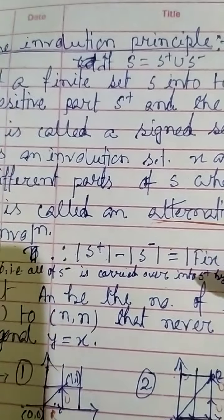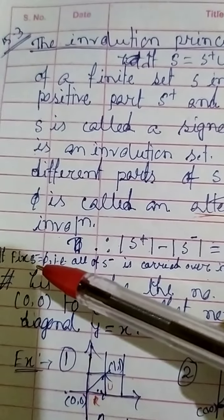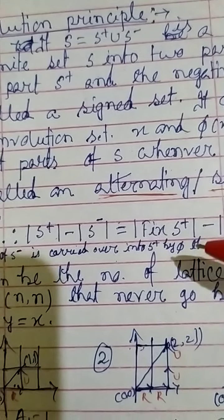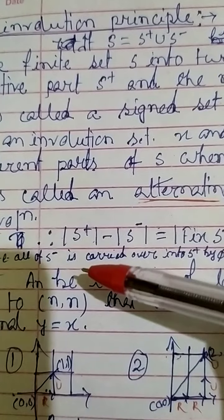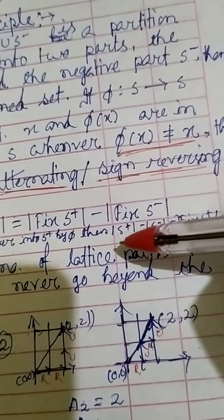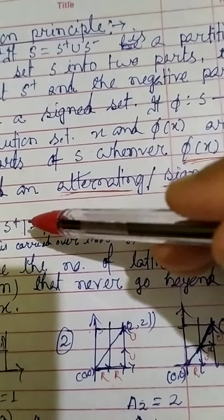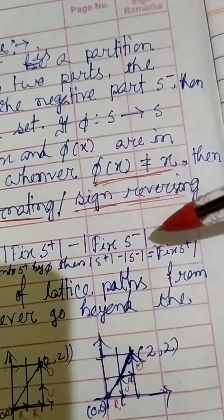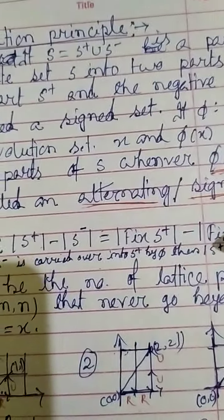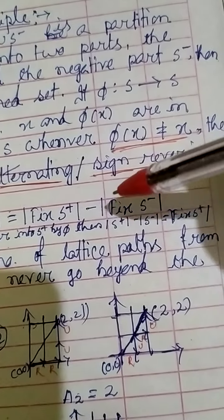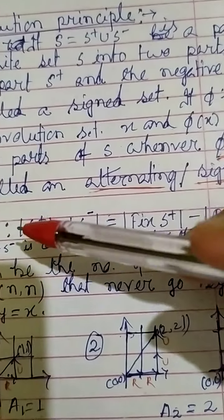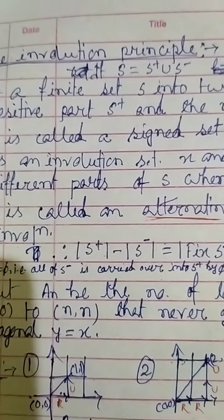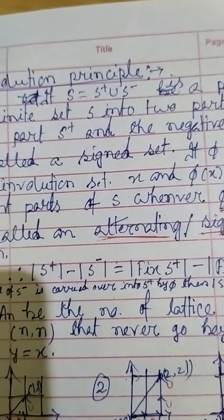Similarly for S-negative. If all of S-negative maps into S-positive by φ — that is, there is no fixed point in S-negative — then this difference equals the number of fixed points in S-positive. So |S⁺| - |S⁻| equals the number of fixed points in S-positive, since the fixed-point set of S-negative is empty.